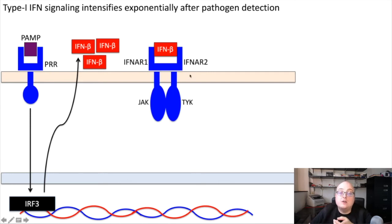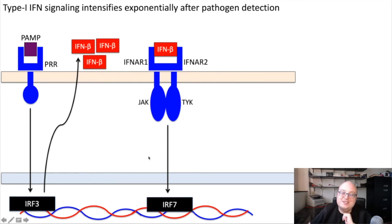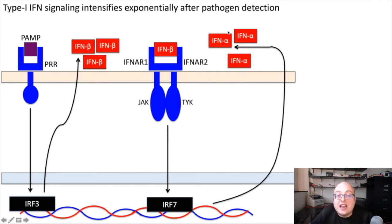IFNAR signals through JAK-STAT signaling, and downstream of that is another transcription factor called IRF7, interferon regulatory factor 7. This interferon regulatory factor is going to induce expression of a different type 1 interferon cytokine: interferon alpha. Importantly, interferon alpha and beta share the common receptor IFNAR. So now interferon alpha can bind to IFNAR, which induces IRF7, which makes more interferon alpha, and so on and so forth.